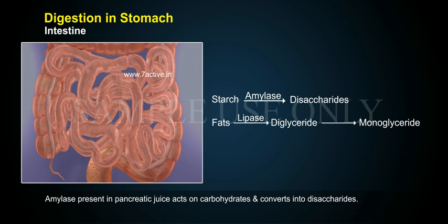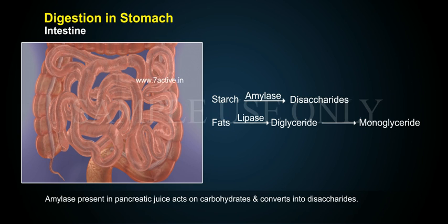Amylase present in pancreatic juice acts on carbohydrates and converts them into disaccharides. Starch, in the presence of amylase, converts to disaccharides. Fats, in the presence of lipase, are converted to diglycerides and then to monoglycerides.